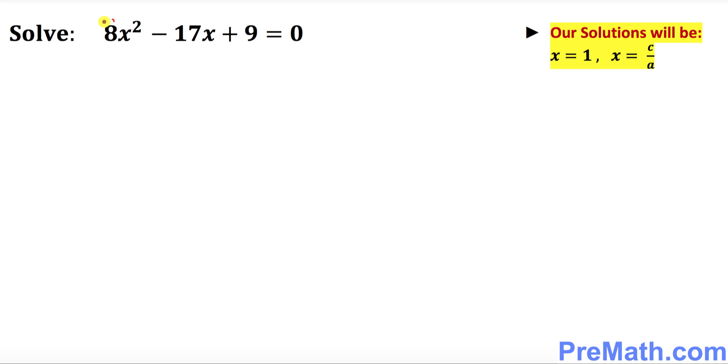How about in this example our a is 8, b is negative 17, and c is 9. Then our solution is going to be for sure x equal to 1 and the other solution is x equal to c, which is positive 9 over 8. That is our answer.